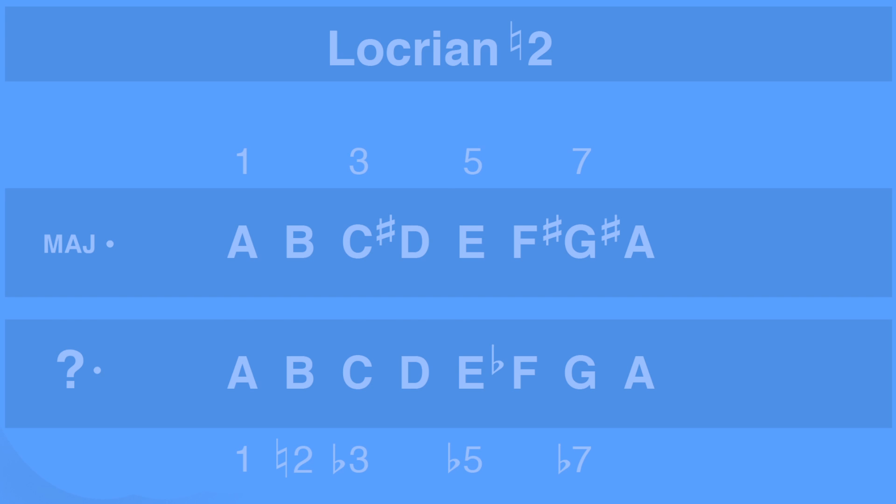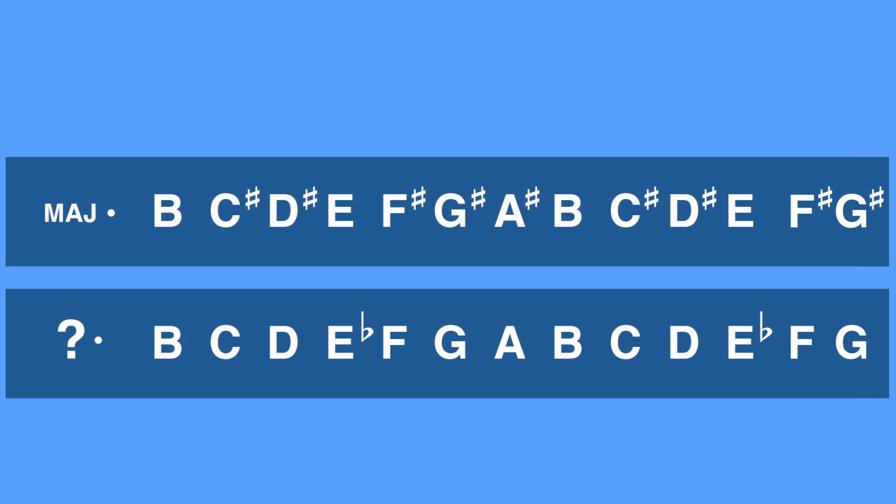Now for the last mode: B, C, D, E-flat, F, G, A, B, C, D, E-flat, F, and G. B major is B, C-sharp, D-sharp, E, F-sharp, G-sharp, A-sharp, B, C-sharp, D-sharp, E, F-sharp, and G-sharp.